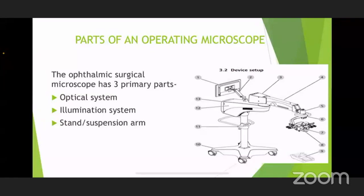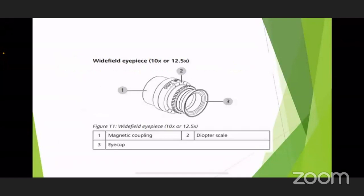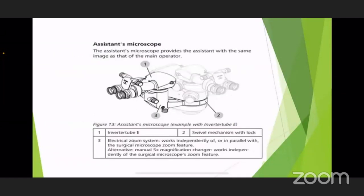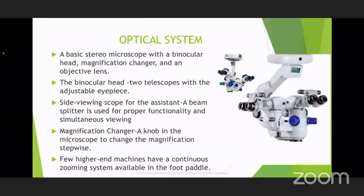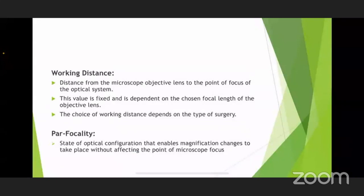The optical system basically consists of a binocular head, the magnification changer, and an objective lens. This is the main surgeon's position, and this is the assistant eyepieces. The magnification changer, which I've already talked about, can be in the form of a knob giving stepwise magnification, or it could be foot-controlled with a foot pedal.